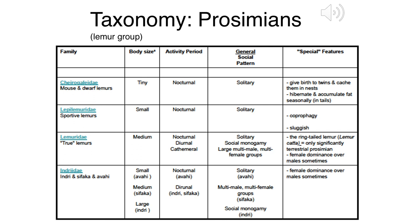Our true lemurs are medium-sized - about the size of a big cat or small dog. Activity ranges from nocturnal to diurnal; social structures range from solitary to monogamous pairs to large multi-male, multi-female groups. Ring-tailed lemurs are the most unique in this group: they are diurnal, live in very large social structures, and are our only significantly terrestrial prosimian. Females are dominant in ring-tailed lemurs, and because they're active daytime ground dwellers, they're relatively easy to study.